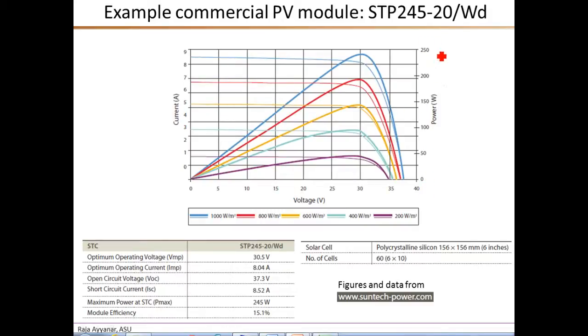The scale for the power is given on the right, going from 0 to 250 watts. So you can see the peak power is roughly the 245 that I mentioned. Now even though I have not shown the test conditions here, these curves are obtained at the standard test conditions STC that corresponds to an irradiance of 1000 watts per square meter, temperature of 25 degrees Celsius, and an air mass AM of 1.5.